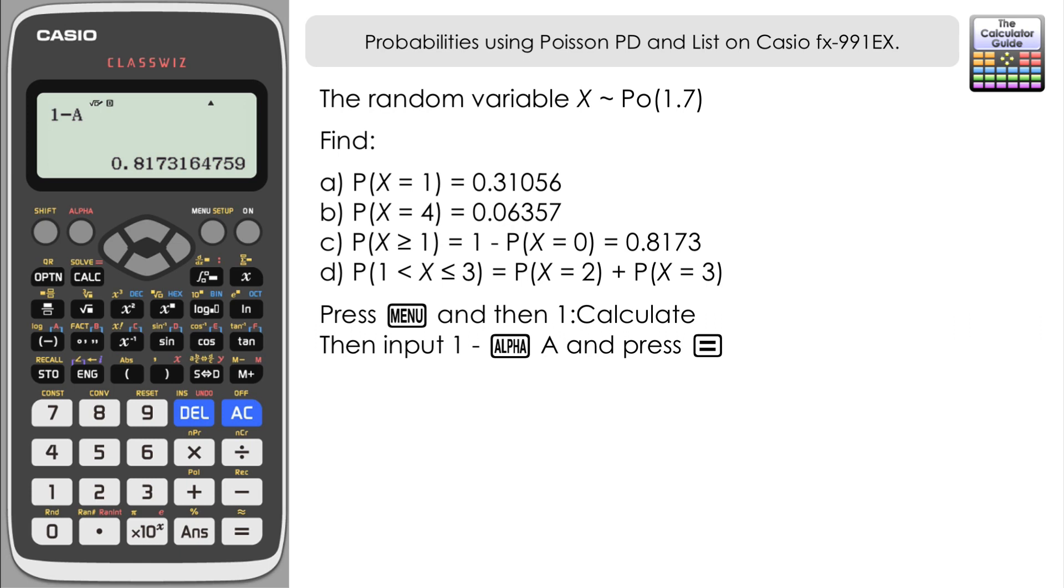Part d, we need to add the probability that X equals 2 and the probability of X equals 3 together to get our answer. That's alpha B plus alpha C, then equals. Here we have our probability for part d: 0.4136 to four decimal places.